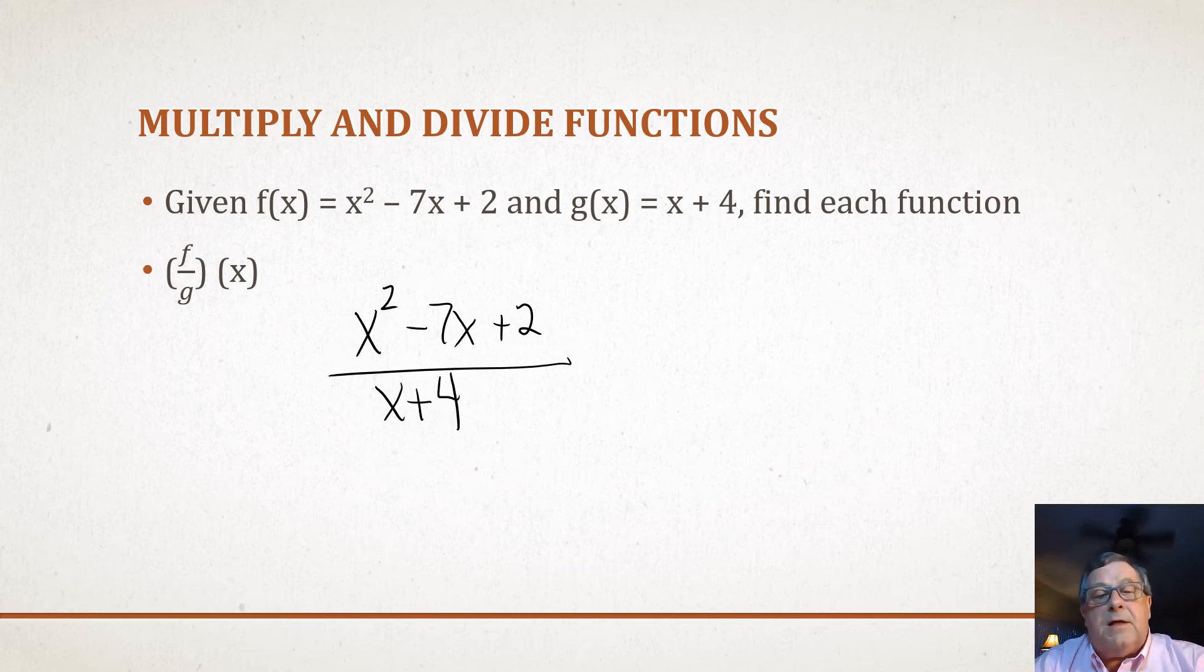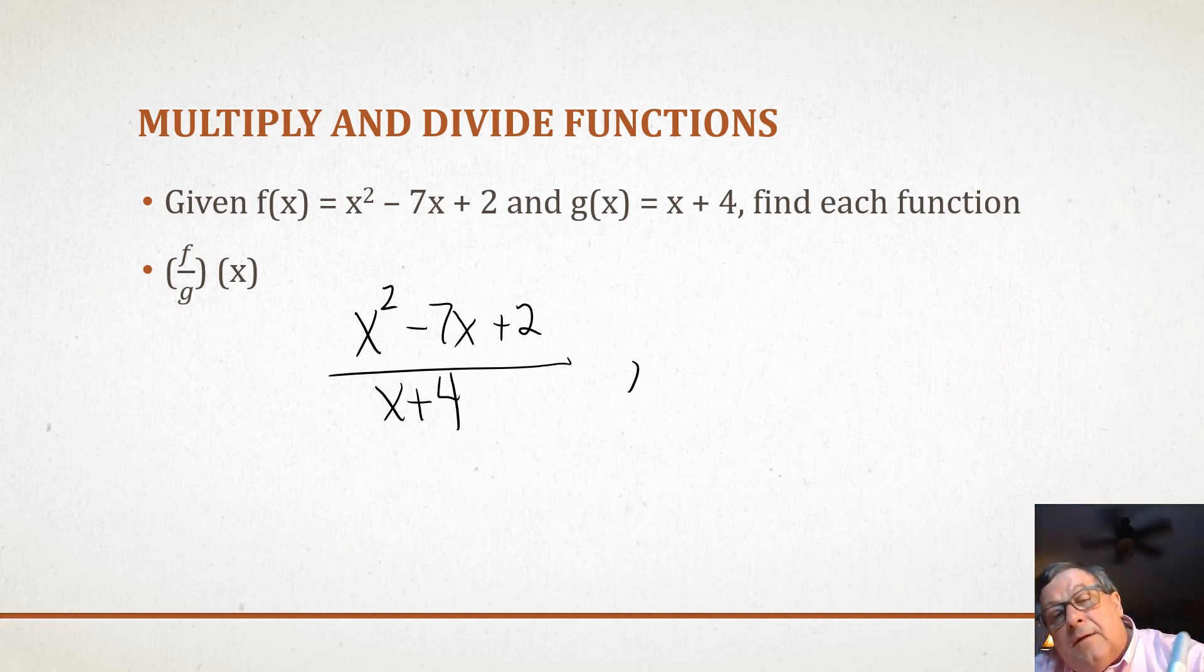Two things I want to pay attention to here when I'm dividing this. I've got a rational function. The first is, since I've got a function in the denominator, I can't divide by 0. That would be undefined. So when x equals -4, -4 + 4 would be 0, so x cannot equal -4.